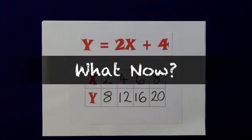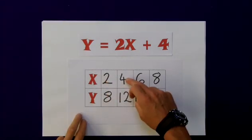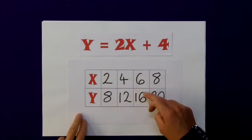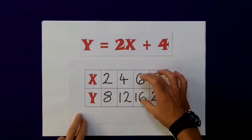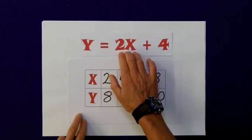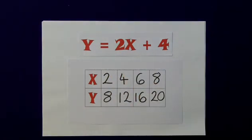I now have all of my values: 2 and 8, 4 and 12, 6 and 16, 8 and 20. And all of these pairs fit this equation. But what can I do with them?